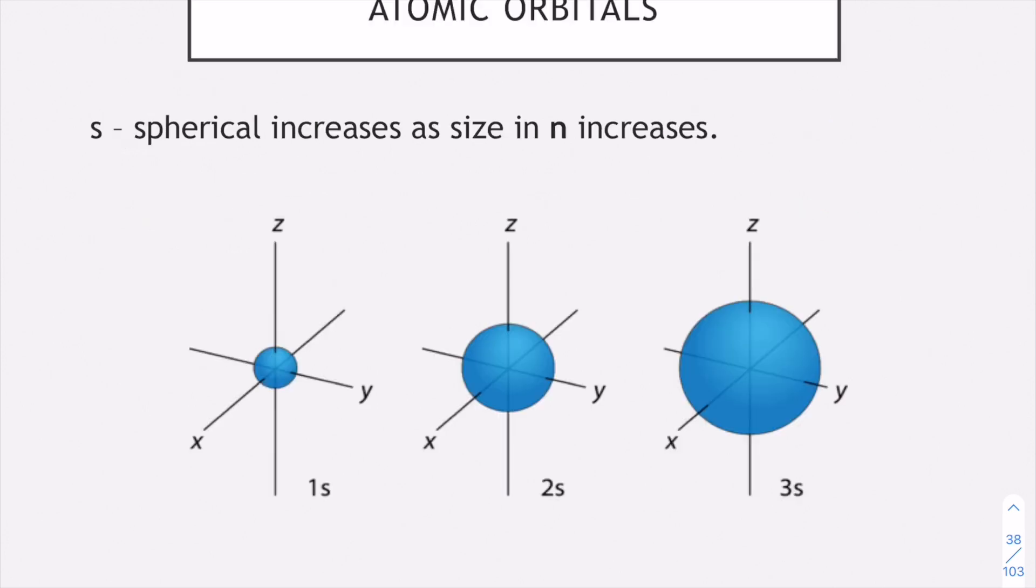Here we have our s orbital, that's your circular shape. As the size of your n increases so does the size of your s orbital, your 4s could be something really large.